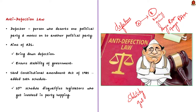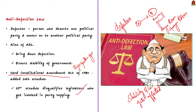The anti-defection law punishes individual legislators — specifically MPs and MLAs — for leaving one party for another. The Indian Constitution initially did not have any provision to curb defection, but the 52nd Constitutional Amendment Act in 1985 introduced the 10th Schedule. The 10th Schedule has provisions to curb defections and is hence called the anti-defection law of India. It was mainly introduced to curb the party hopping and horse trading happening among Indian legislators.